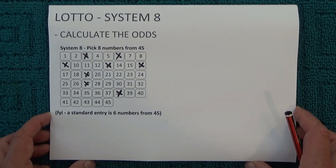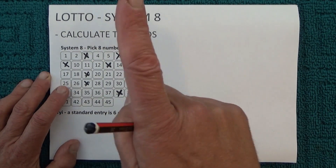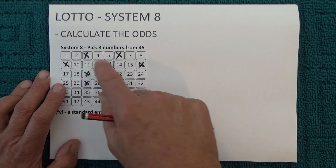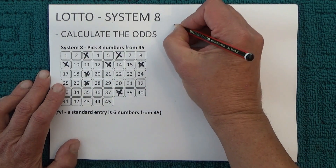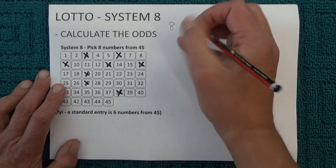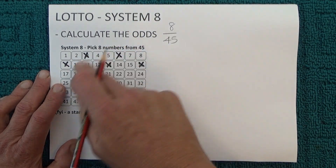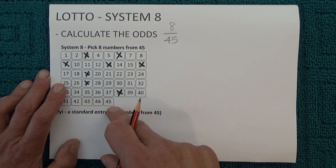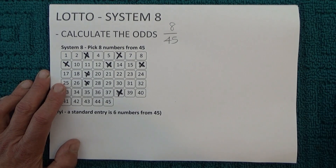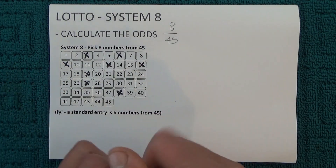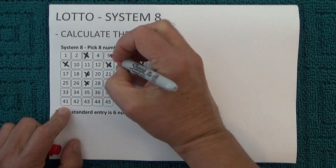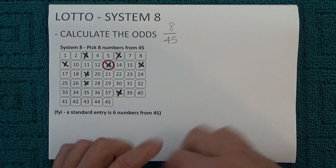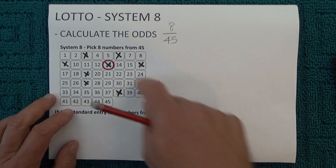Now when you're watching the draw for Lotto, for the first number drawn you actually have eight chances in 45, because there are eight unmatched numbers on your coupon and there are 45 balls in the barrel. So you've got eight chances in 45 of matching the first number that's drawn. And to show that you have actually matched one of those numbers, I'll just randomly mark off one of those numbers on this coupon.